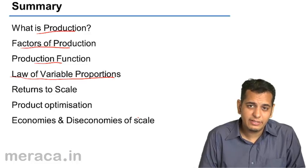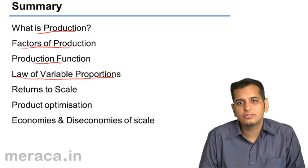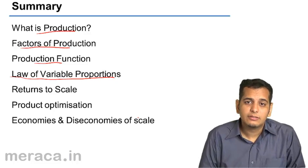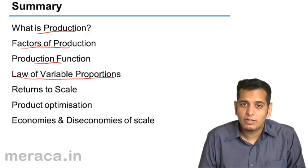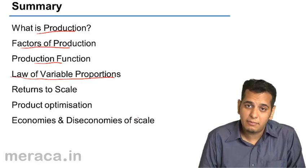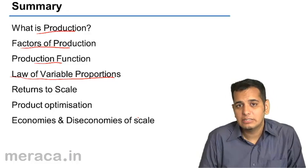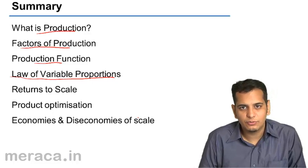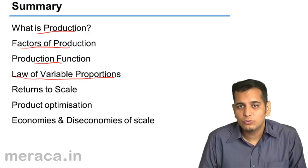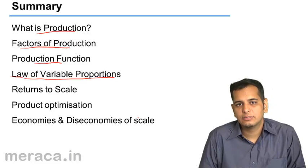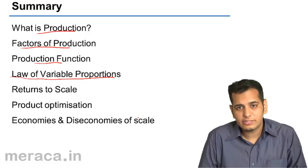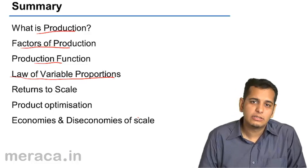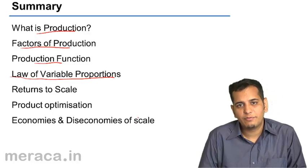The second stage is the stage of diminishing returns. This stage ends when the total product curve is maximum, but the marginal product curve meets the x-axis. That is, MP is zero. AP tends to fall in this stage. During this whole stage, AP and MP both tend to fall.